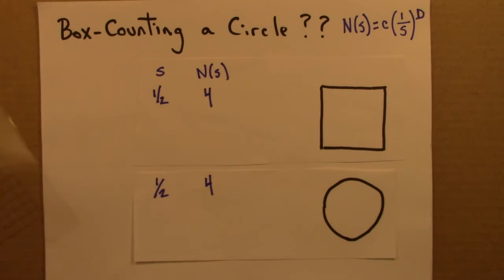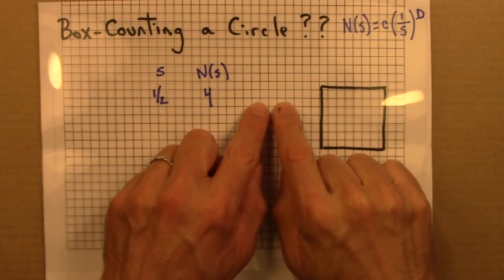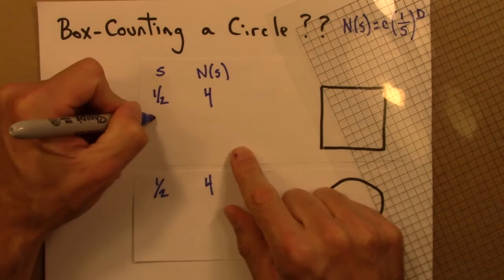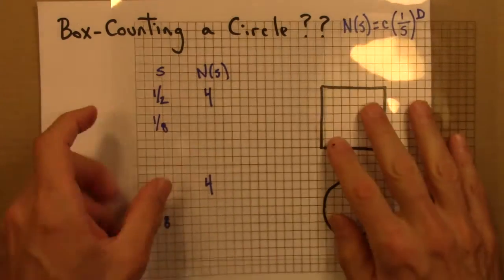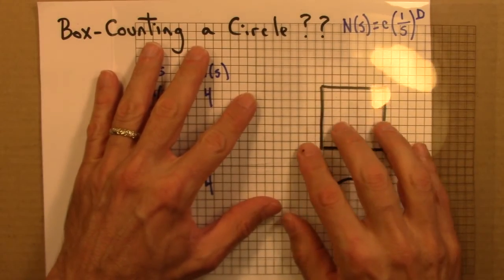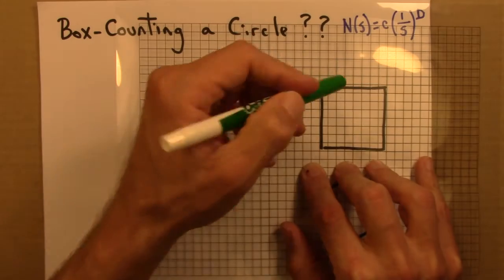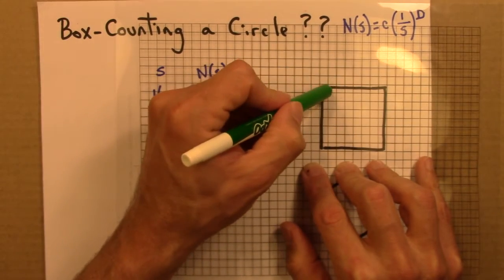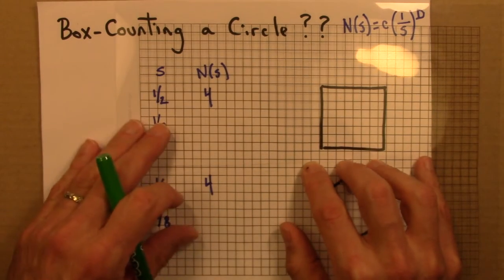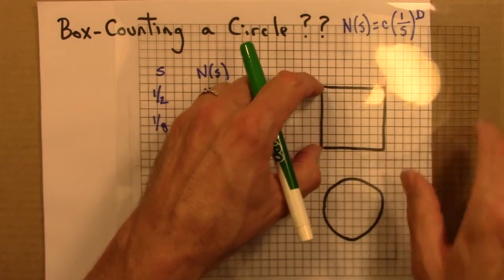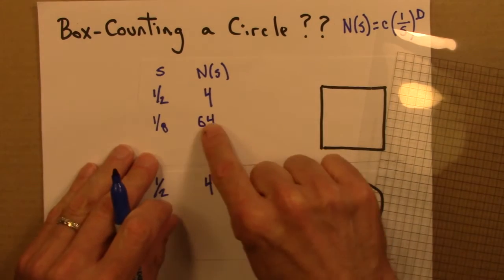Now let's go down two sizes — half of a half — so the boxes have a side of one-eighth. For the square, counting across: 8 × 8 = 64 boxes. It's not a coincidence I'm taking that number and squaring it — the square is two-dimensional. So at s = 1/8, N(s) = 64 for the square, and 8² = 64.